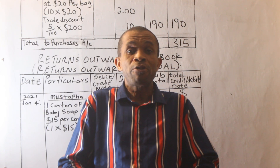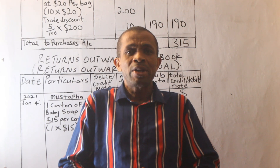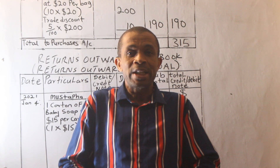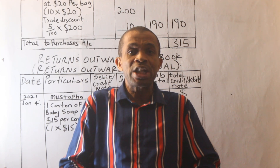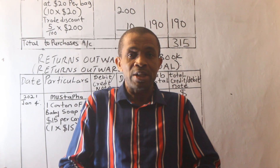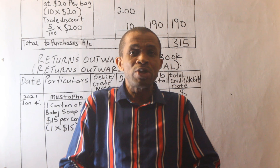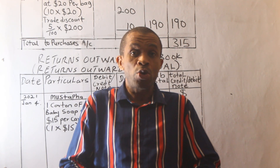Now assume that on January 8th, we returned two ladies' bags to Mr. Lee. Recall that we earlier purchased some ladies' bags from Mr. Lee. So firstly, find out who Mr. Lee is — he is a supplier, meaning we previously purchased from him. Secondly, find out how much we purchased each ladies' bag for, and also take into consideration whether there is trade discount on the credit purchases. We assume in this illustration that there was a discount of 5%.